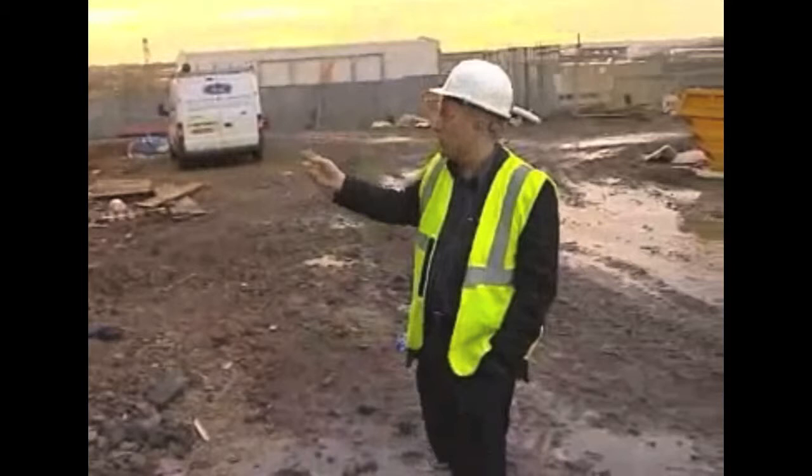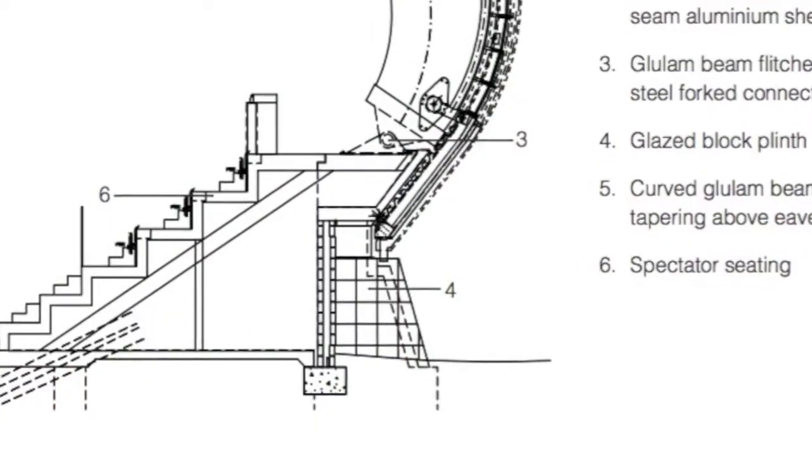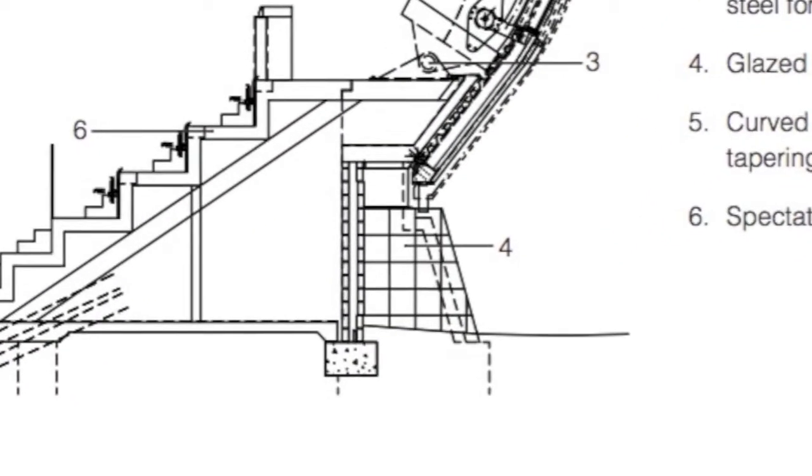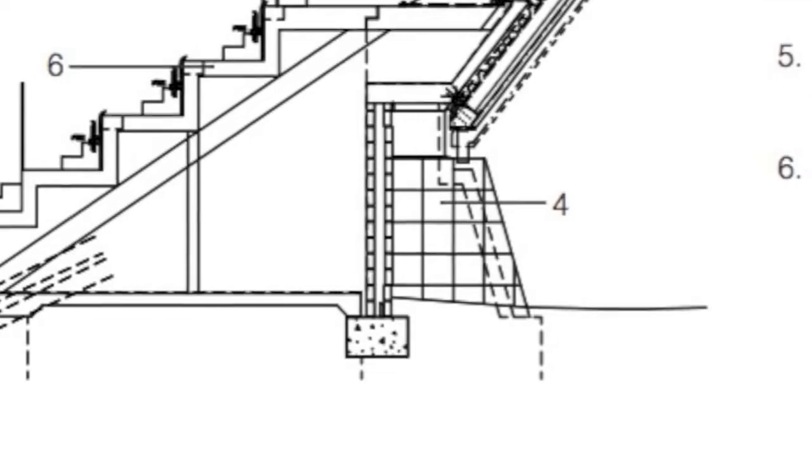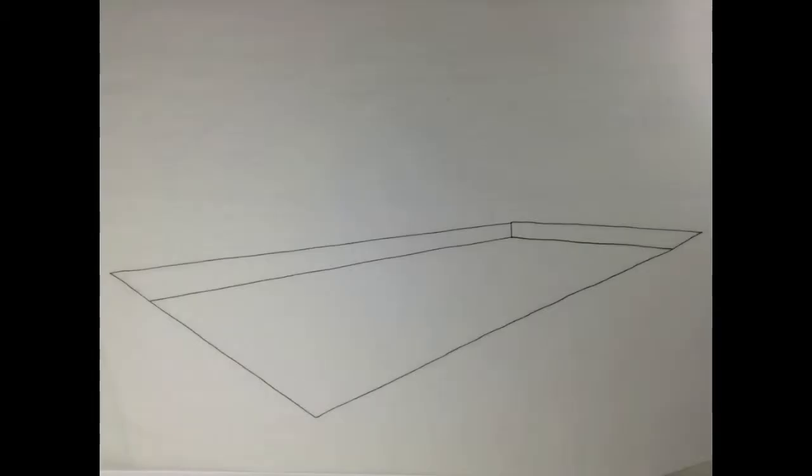Inicialmente se hizo la excavación correspondiente a la cimentación, la cual no tuvo que ser muy profunda. Al momento de encontrarse ya lista, se realizó la excavación de la piscina, una piscina olímpica y una piscina para clavados. A estas dos excavaciones correspondientes, posteriormente se les fundieron los muros de contención, para lo cual se utilizó hormigón armado.